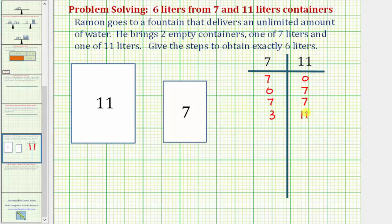Next, we're going to empty the eleven-liter container, so we'd have three liters here and zero liters here. Next, we're going to pour these three liters into the eleven-liter container, so we'd have zero here and three here.